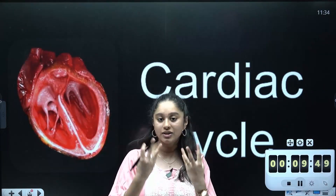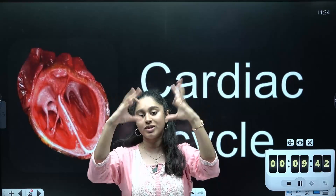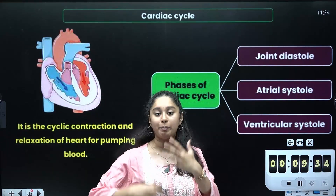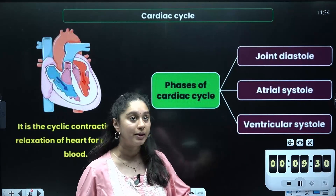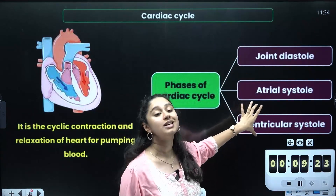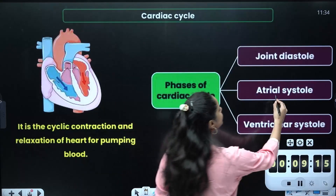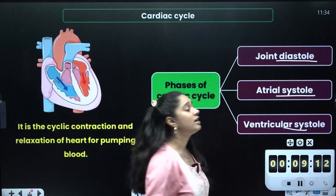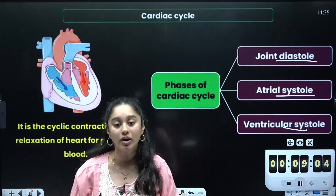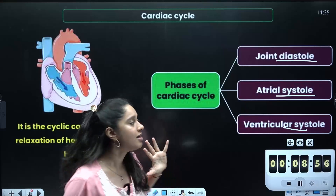The cardiac cycle is essentially one complete cycle of the heart. The blood goes to the atrium, then the ventricles — that is one cycle. Now, let's understand the key words: systole and diastole. We are referring to contraction and relaxation. When the heart is squeezing, we call it systole. When it is relaxed and dilated, we call it diastole.